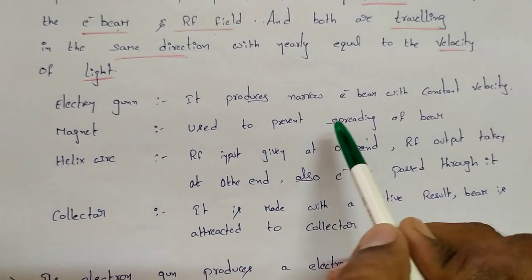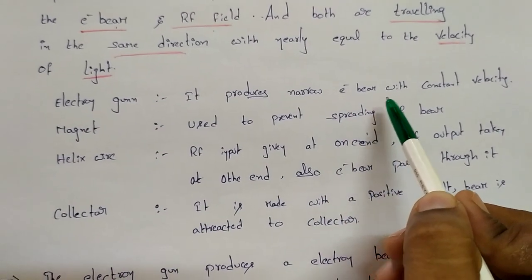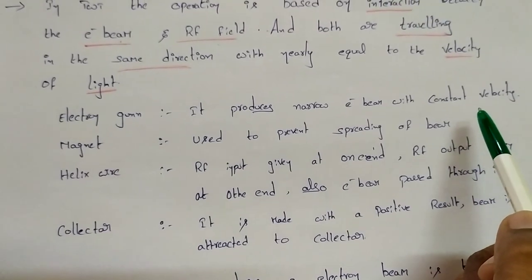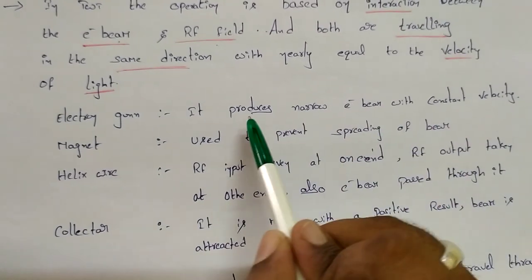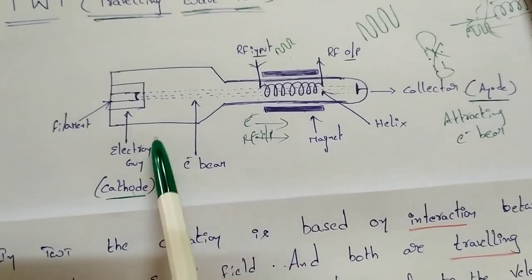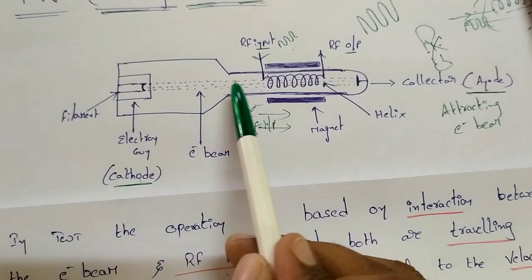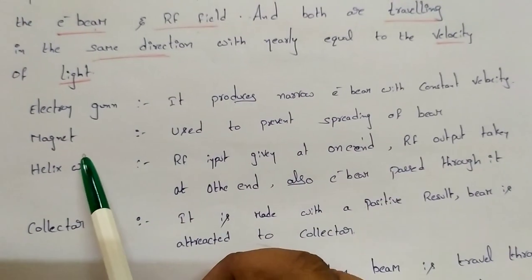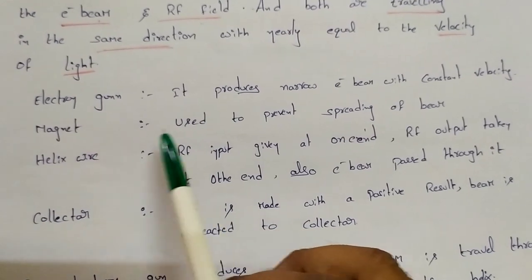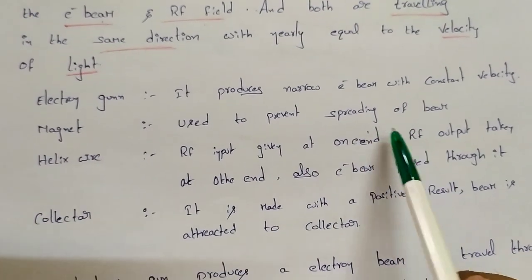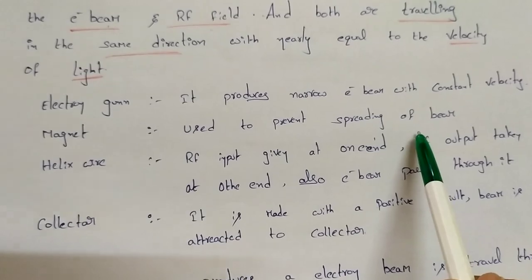The electron gun produces a narrow E-beam with constant velocity. The magnet is used to prevent spreading of the beam, keeping the electron beam focused as it travels through the center of the helix.